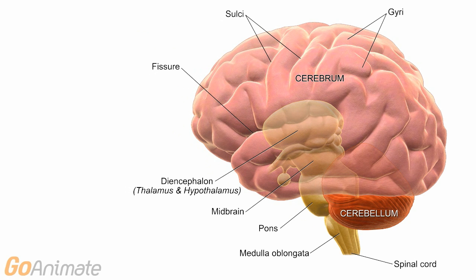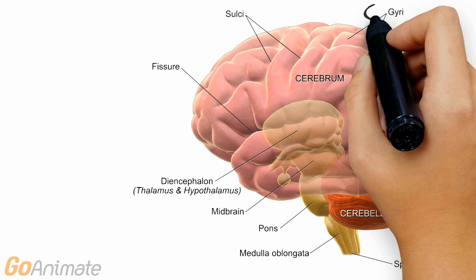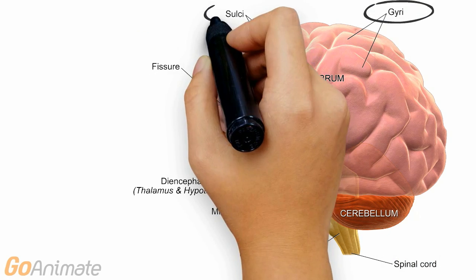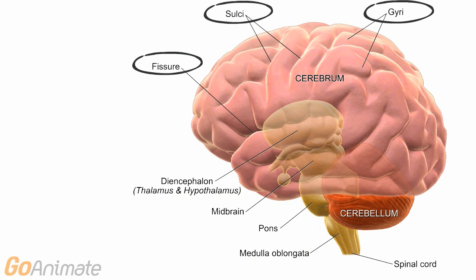The outer portion of the brain is called the cerebrum. The cerebrum contains a number of structures. The folds on the surface of the cerebrum are called gyri. The grooves are called sulci and the deep grooves are called fissures.